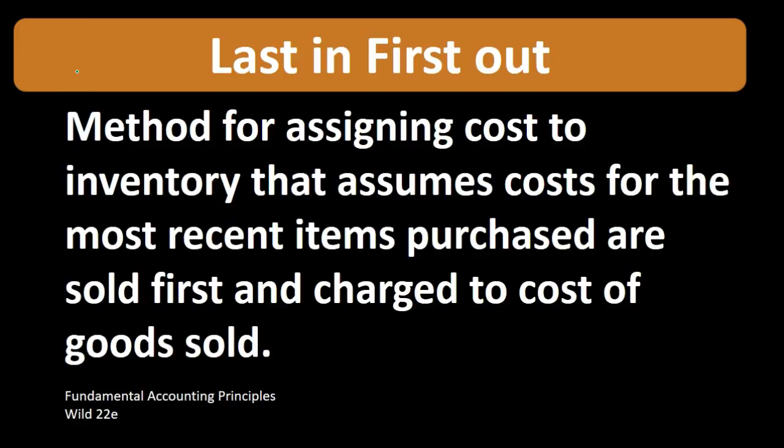Last in first out is usually a method that's more counterintuitive to most of our thoughts when we try to think of the physical flow of inventory. We would generally think the first unit we purchase would be the first unit we sell. But we could assume the opposite — that the units being sold are the last units we purchased. You can imagine it if we stack the shelves by putting the new stuff in front of the old stuff, so we're always selling the new stuff.